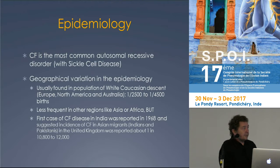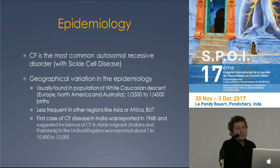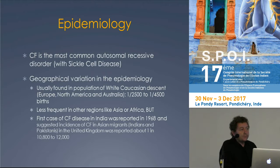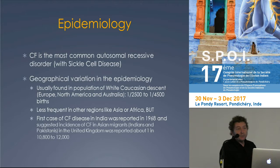On a toujours dit que la mucoviscidose était très rare, voire exceptionnelle en Asie et en Afrique. Grâce aux nouvelles méthodes de diagnostic, on sait aujourd'hui qu'elle a une prévalence non négligeable même en Inde. Les premières descriptions en Inde remontent à 1968. Des études, notamment au Royaume-Uni, estiment que la prévalence est de 1 sur 10 000, ce qui n'est pas exceptionnel. Ce n'est pas aussi important que chez les populations caucasiennes, mais ce n'est pas du tout une maladie rare.